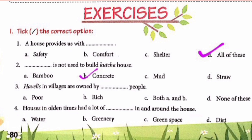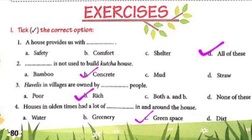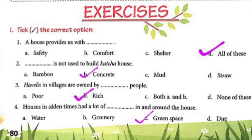Question 3: Havelis in villages are owned by — (a) poor, (b) rich, (c) both A and B, (d) none of these. The answer is option B: rich. Rich people owned havelis. Question 4: Houses in olden times had a lot of — (a) water, (b) greenery, (c) green spaces, (d) dirt. The answer is option C: green spaces. Houses in olden times had a lot of green spaces.